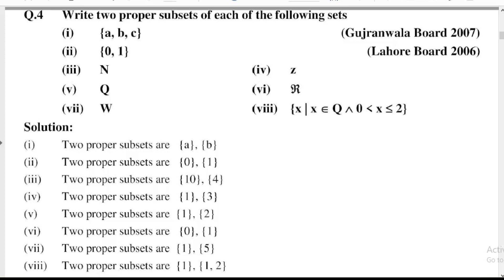Part 2: {0, 1}. Two proper subsets are {0} and {1}.